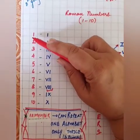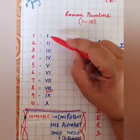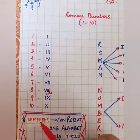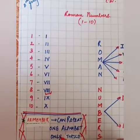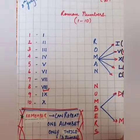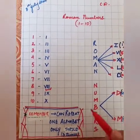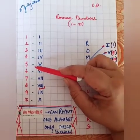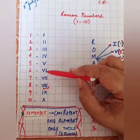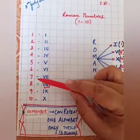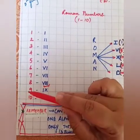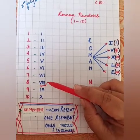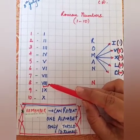Dear students, when we write 1, it stands for I; 2 is II; 3 is III. You should remember that you can repeat one alphabet only 3 times. When we have to write 4, it is I and V (IV); 5 is V; 6 is V and I (VI); 7 is V, I, I (VII); 8 is V, I, I, I (VIII). See — I has now been repeated 3 times, so we will not repeat it again.